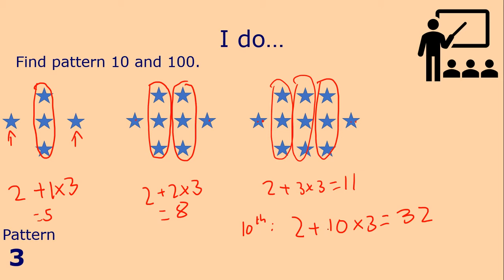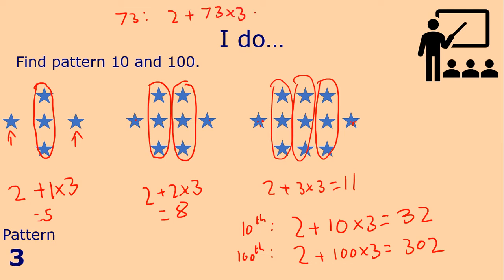That's just ten times three plus two. For the hundredth pattern, there's going to be two stars plus a hundred lots of three, so three hundred and two stars in the hundredth pattern. And if you were asked how many stars in the seventy-third pattern, you could work that out — the seventy-third pattern is going to be two stars plus seventy-three lots of three, which would be two hundred and twenty-one. You're able to work out any pattern you could possibly be asked.